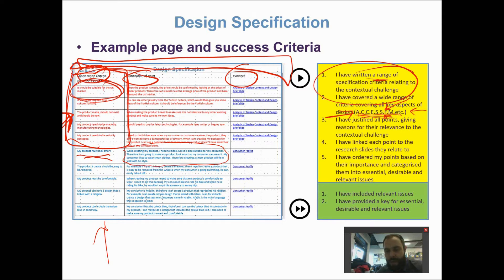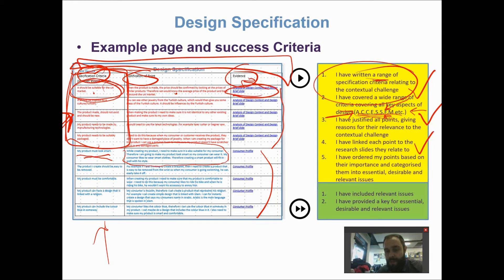The evidence column shows that you've gone through the process properly, which is the whole point of a design specification. For each point, you provide a reason why it's important and then show where in your research that importance was identified — in this case, the design context analysis and the design brief. This student has also written a consumer profile, giving him further points. It would have been nice to see more links to other research, but he has a good list of points overall.